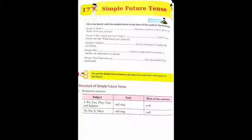For example: 'We shall move to another city.' 'He will come to New York tomorrow.' Over here, 'shall move' is a simple future tense form of a verb. Then, in 'He will come to New York tomorrow,' 'will come' is also a simple future tense form of a verb.